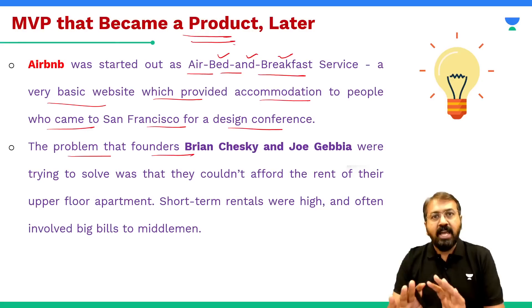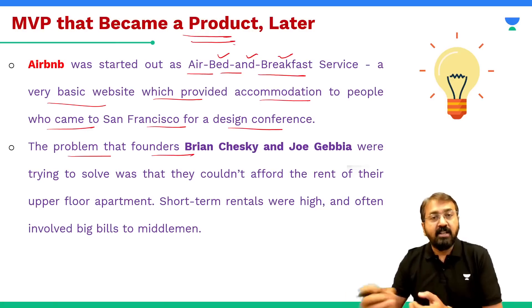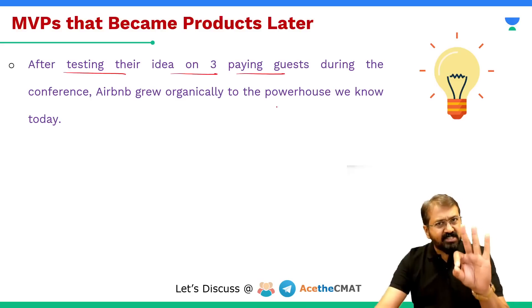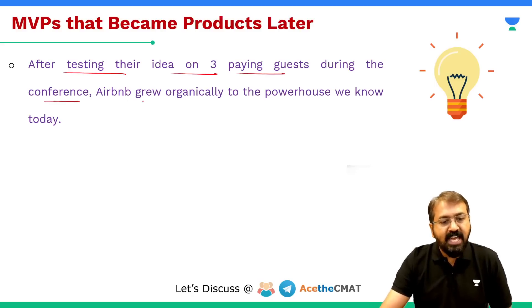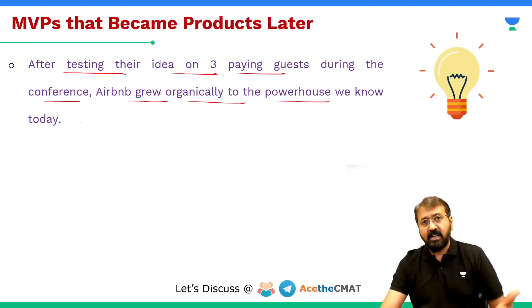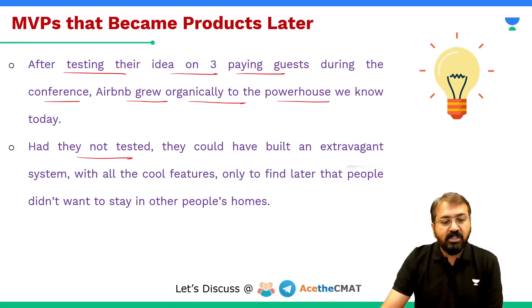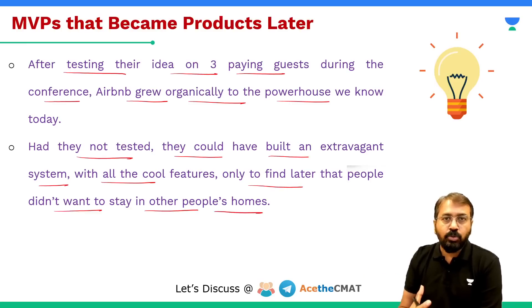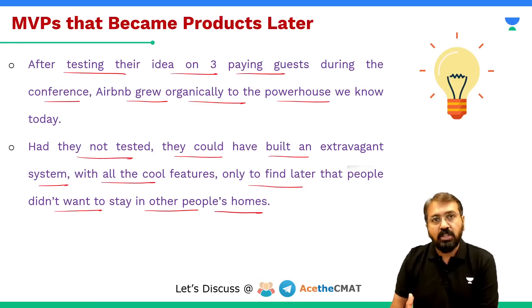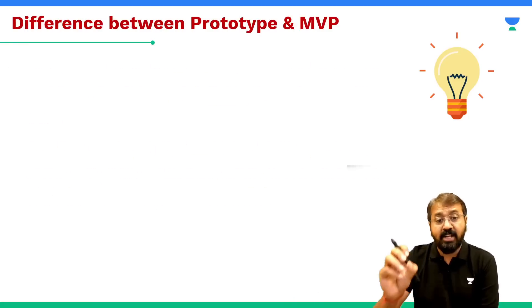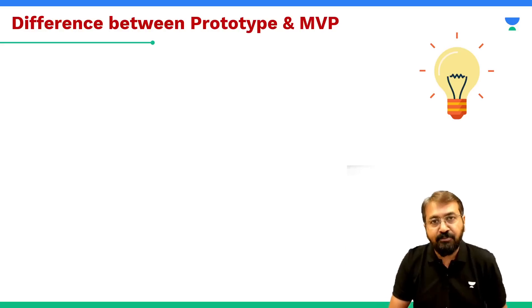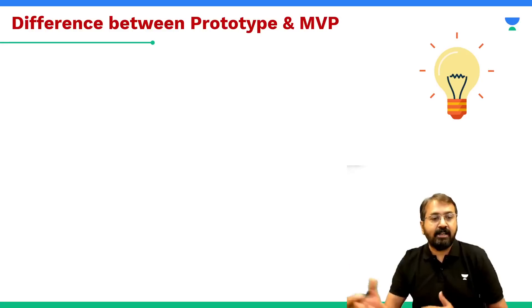They thought there was a need for a service where travelers could get basic accommodation at a cheaper cost. So they created a minimum viable product providing basic services — a nice room, a bed, and breakfast in the morning. After testing their idea on just three paying guests during the conference, Airbnb grew organically into the powerhouse we know today with millions of users. Had they not tested first, they could have built an extravagant system with all the cool features, only to find later that people don't want to stay in other people's homes.